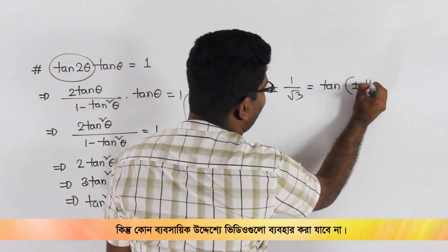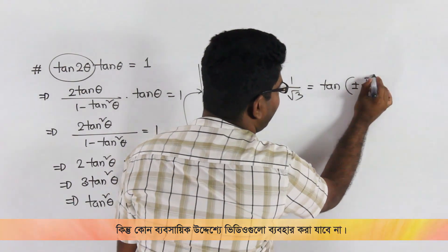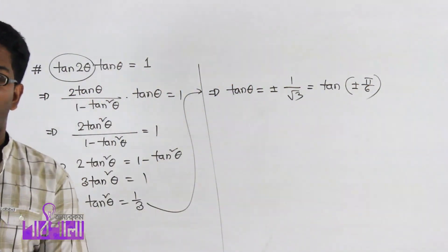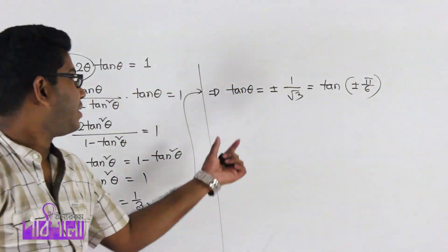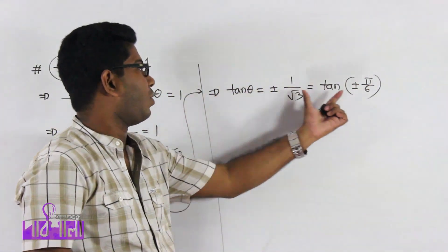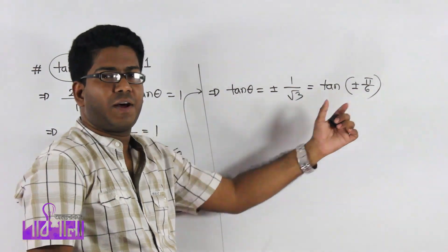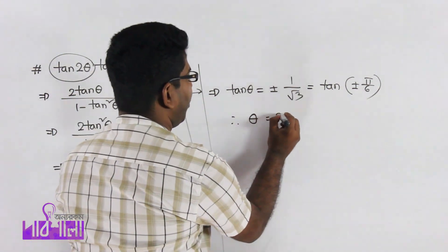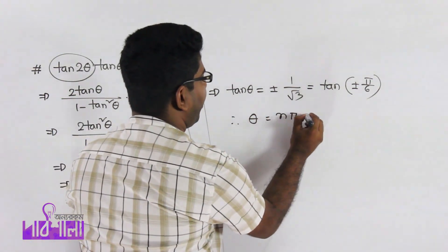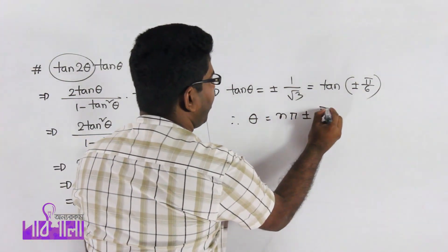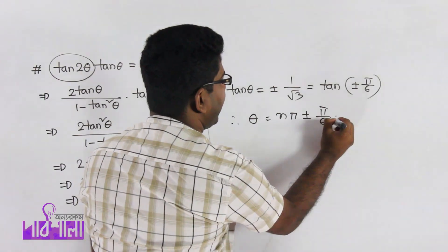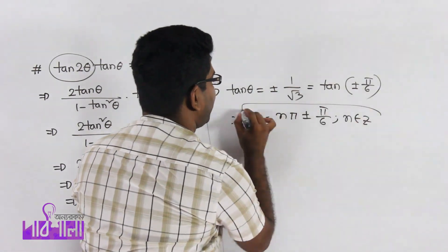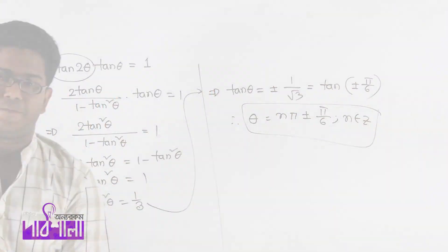Then tan squared theta equals 1 by 3, so tan theta equals plus or minus 1 by root 3. The general format is tan theta equals tan alpha, giving theta equals nπ plus or minus π by 6, where n belongs to integers.